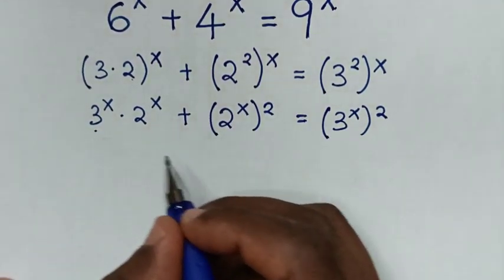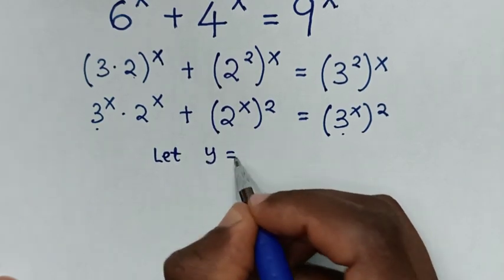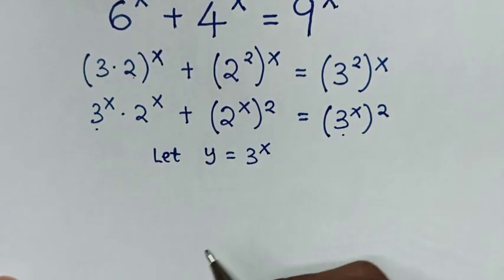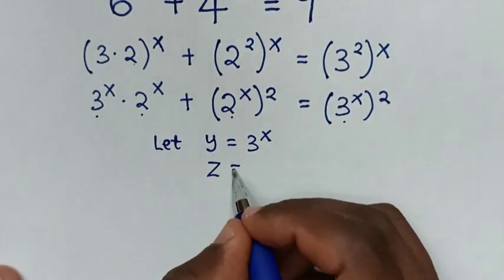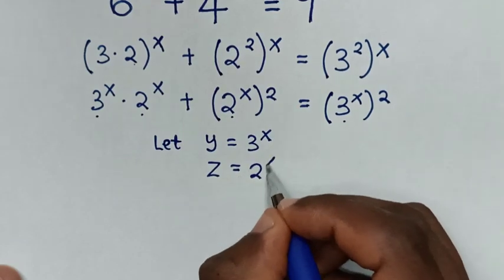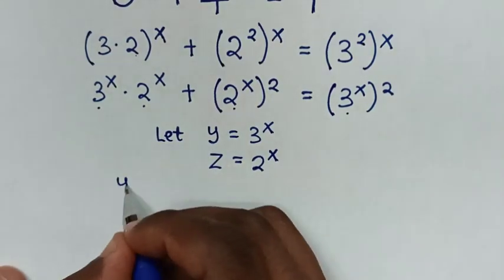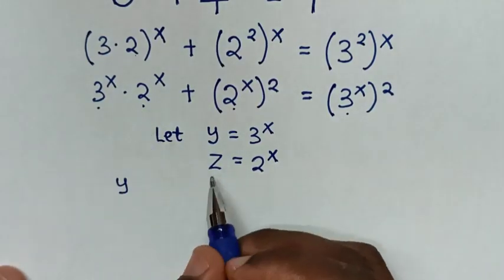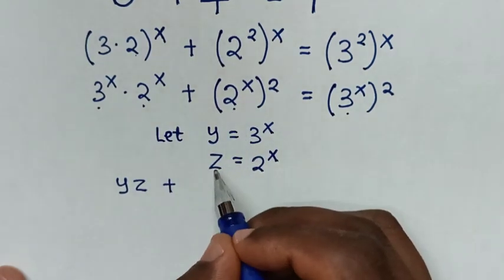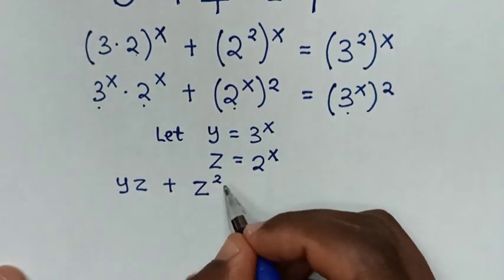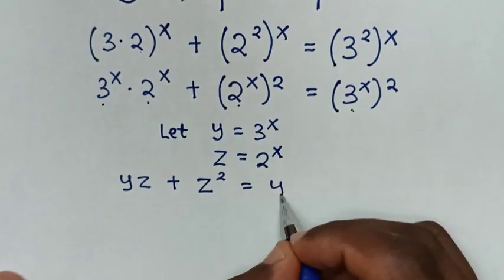In the next step, 3^x is common so we let y = 3^x, and 2^x is common so we let z = 2^x. Then our equation becomes: y times z plus z squared is equal to y squared.